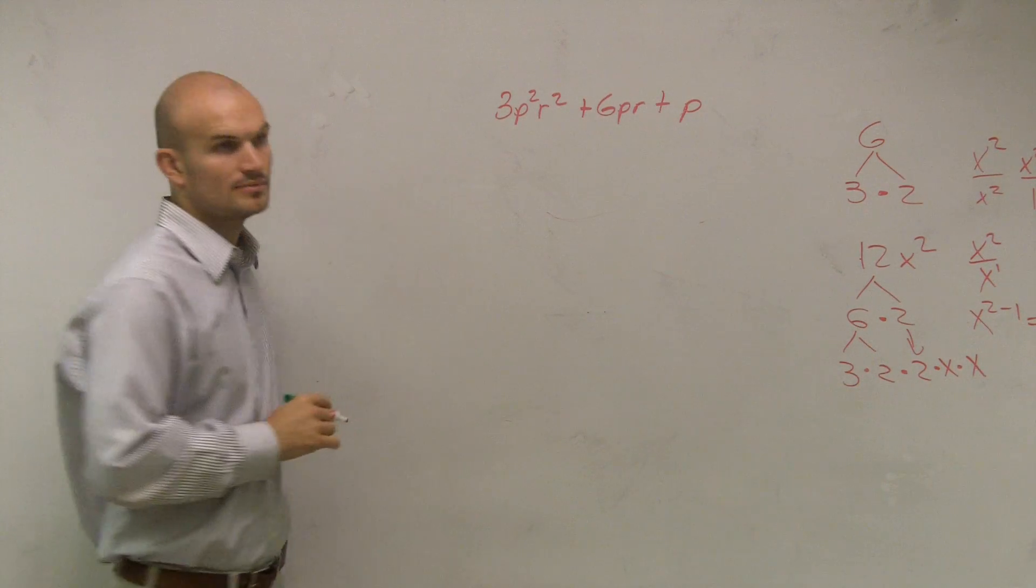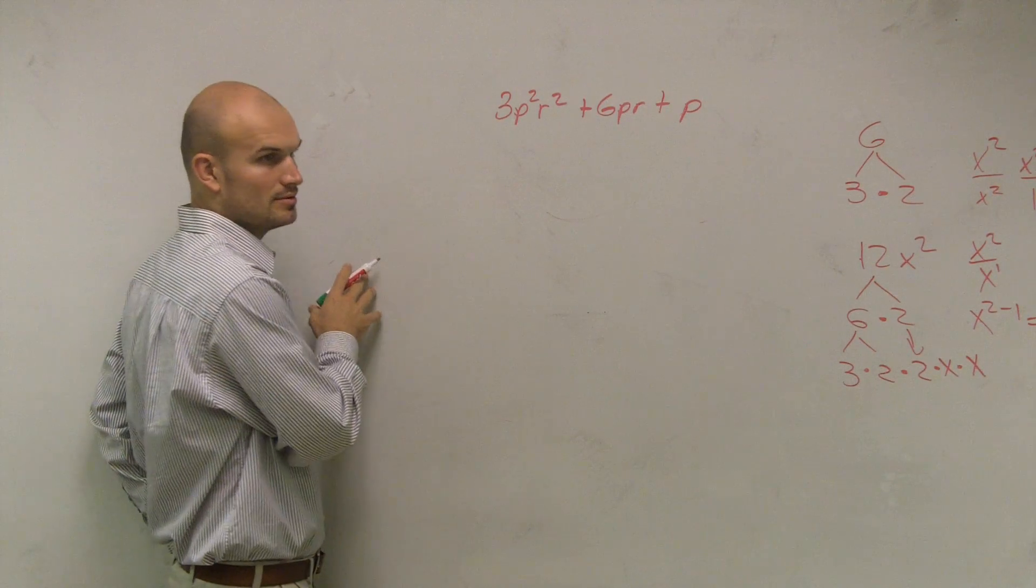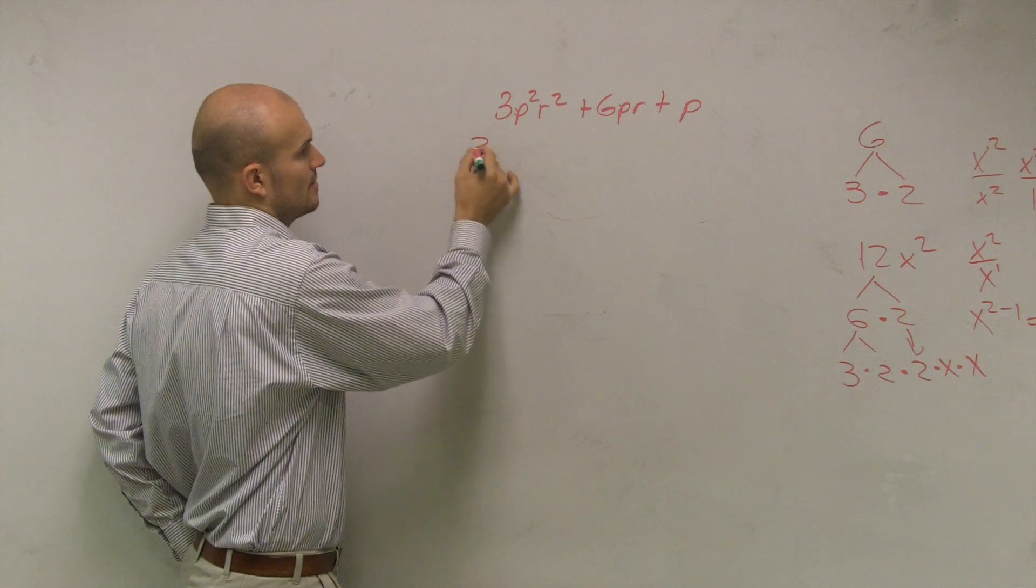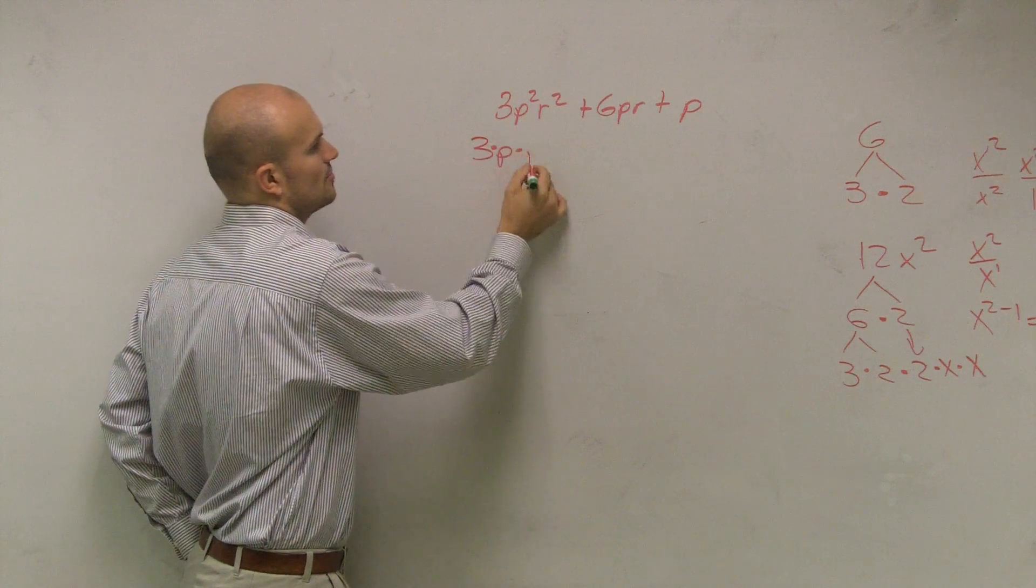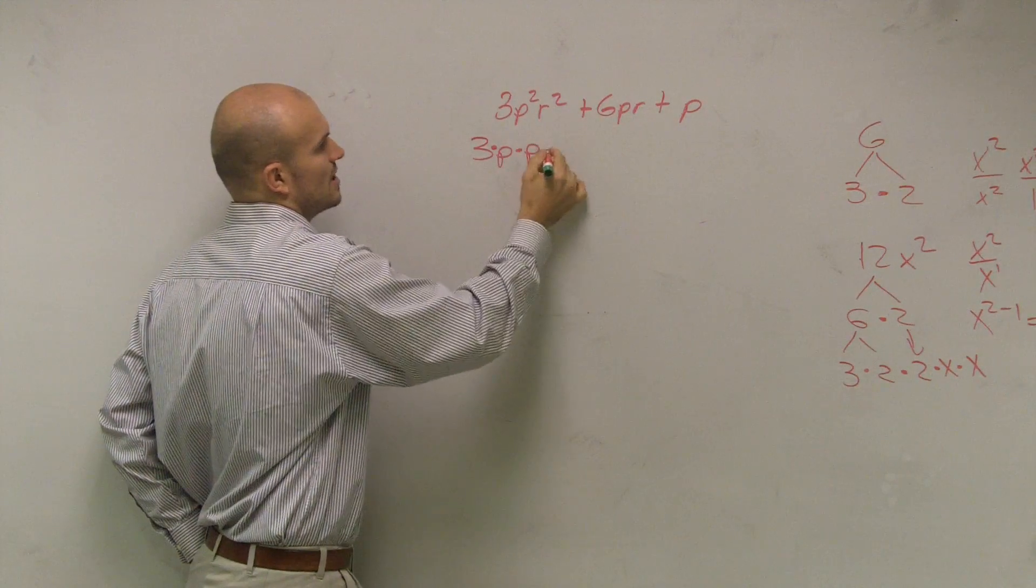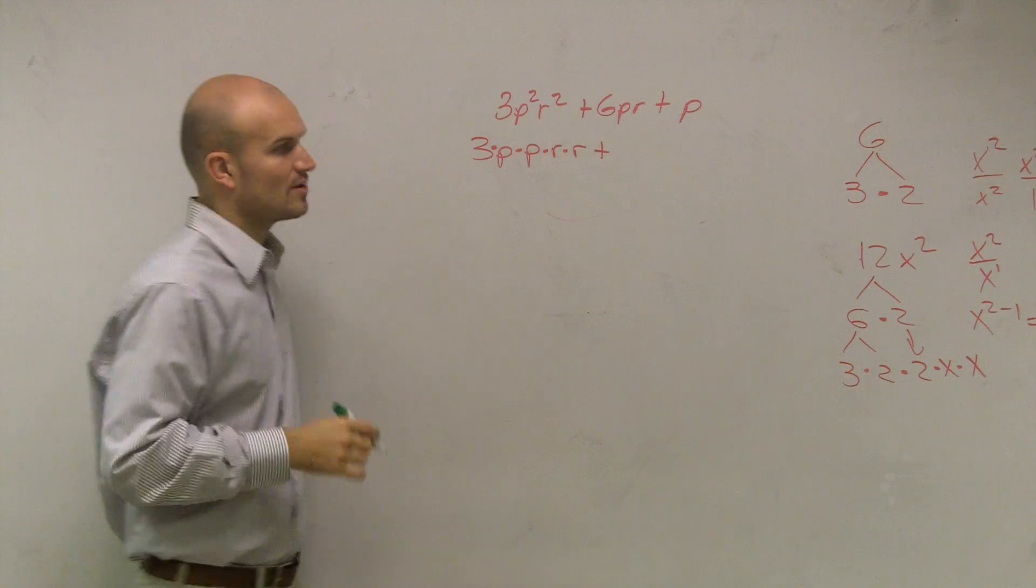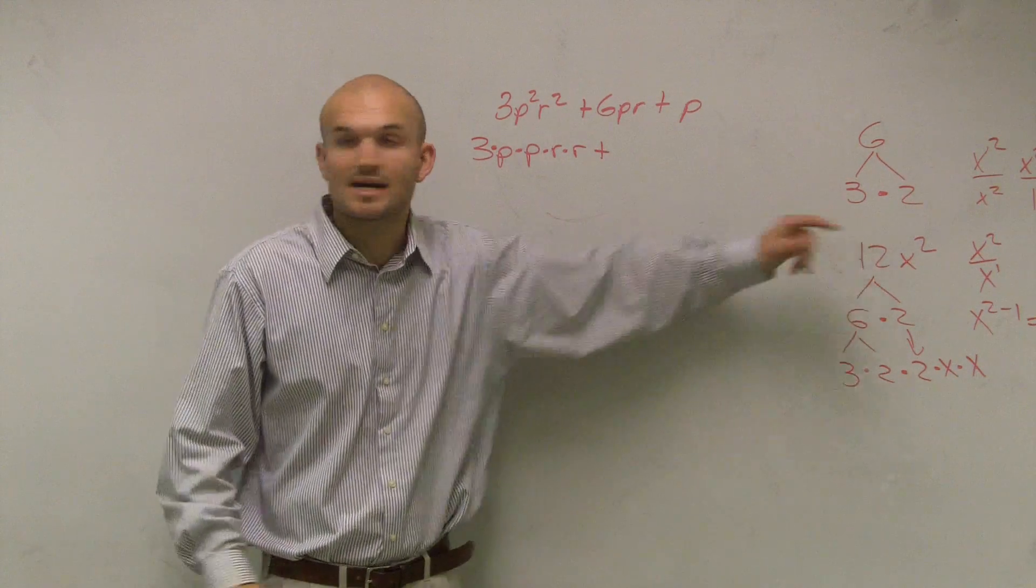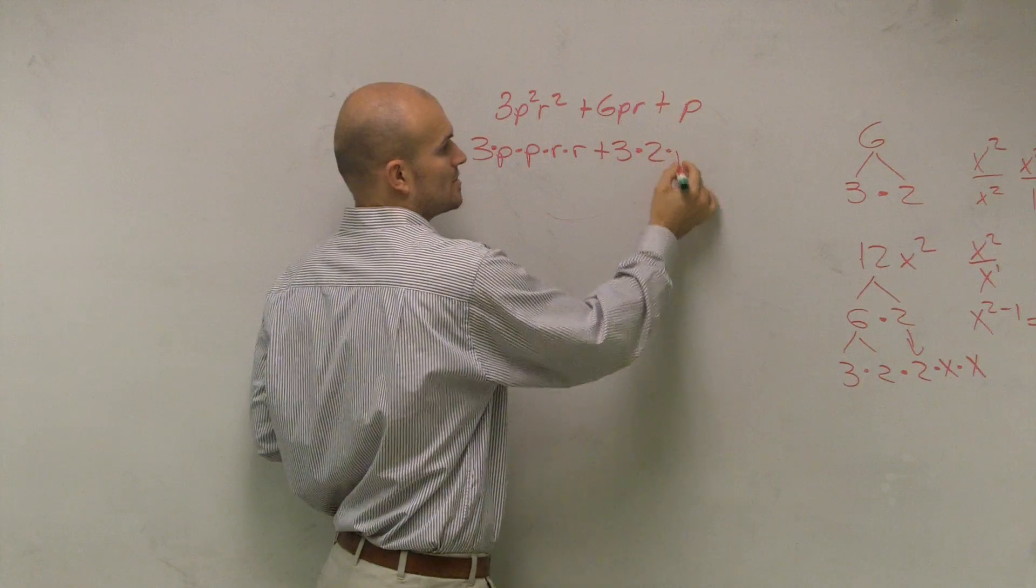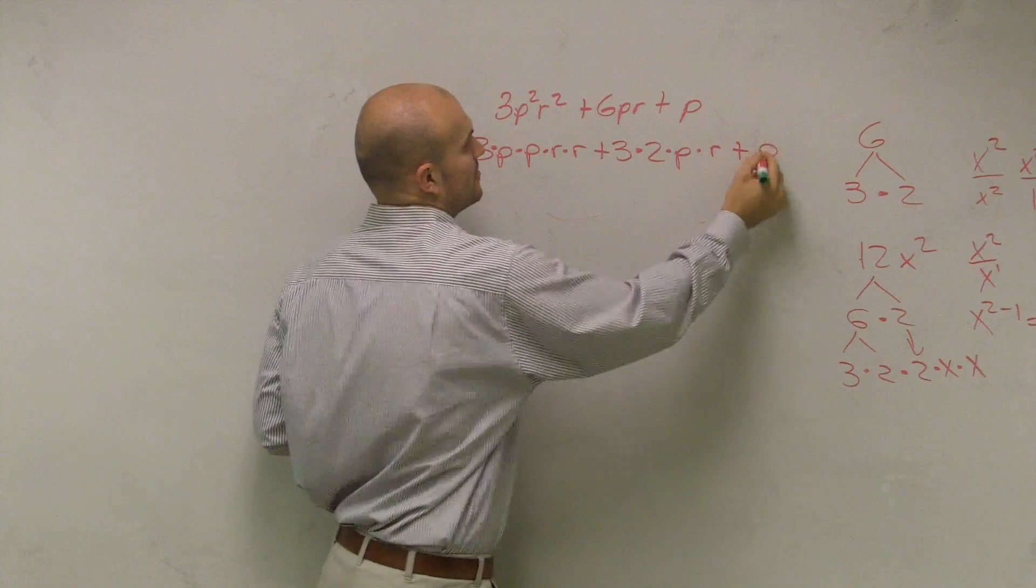Is 3 a prime number? Yes. I can't do anything else with 3, right? Is p squared though a prime number? No, we can write it as p times p, right? So p times p, r squared, we can write it as r times r. And plus, is 6 a prime number? Obviously no. We can write 6 as 3 times 2, right? And then p and r, those are both prime numbers, so I'm just going to have to write those out. p plus p.